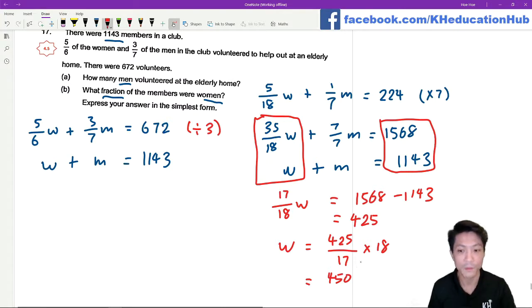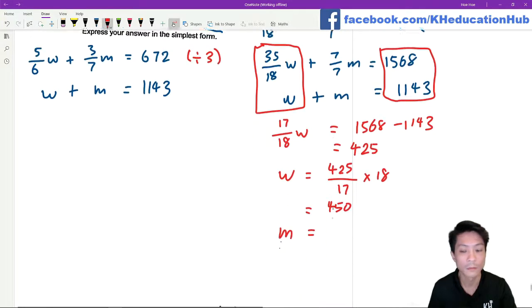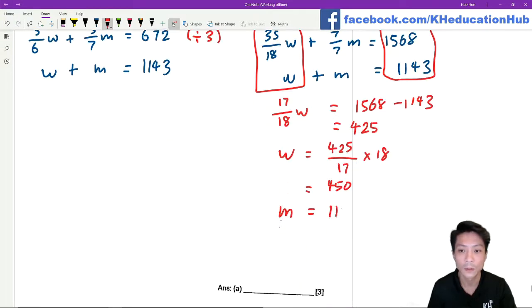Which means that the men will be 1143 minus 450, which equals 693.